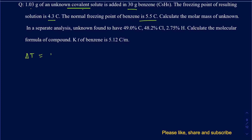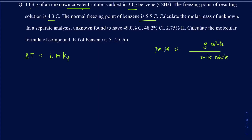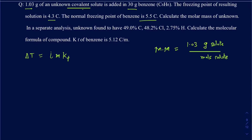Delta T is going to be equal to i·m·Kf. We're trying to figure out the molar mass, so the formula for molar mass — or the definition of molar mass — is the grams of your solute divided by the moles of that solute. We do know how much solute we're using: 1.03 grams. We don't know how many moles of solute we have, so we're going to work it backward to figure out the moles, and once we have the moles we can find the molar mass easily.